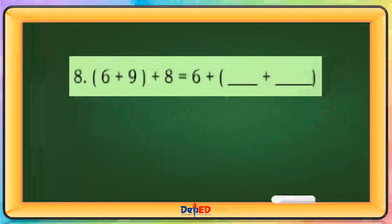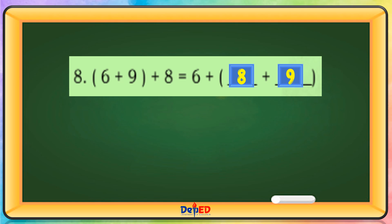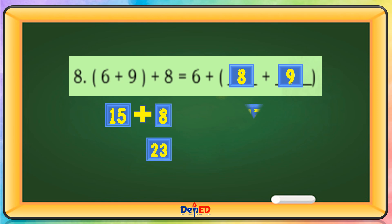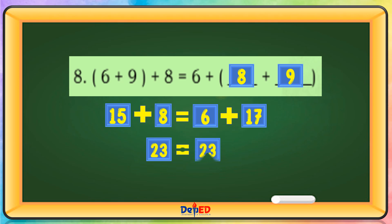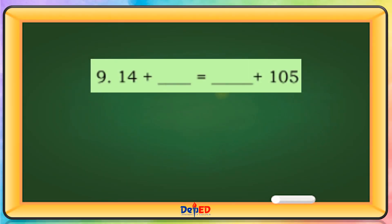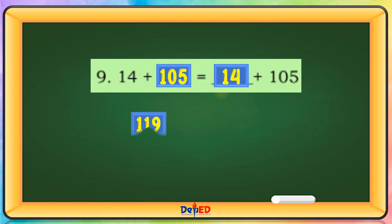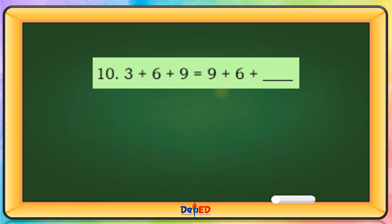6 plus 9 plus 8 — our missing terms are 8 and 9. 6 plus 9 equals 15, plus 8. 15 plus 8 equals 23. 8 plus 9 equals 17, plus 6. 6 plus 17 equals 23. 14 plus 105 equals 119. 3 plus 6 plus 9 — our missing term is 3. This equals 18.